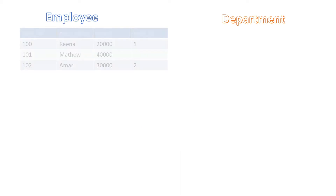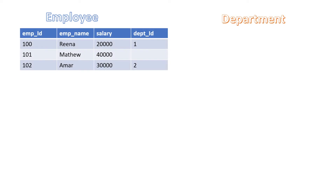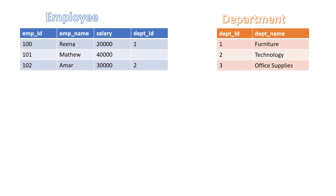Let us understand with an example. Consider the employee and department tables. In the employee table we have four columns, and in the department table we have two columns. The common column between these two tables is department ID. Let's see how to write an inner join.